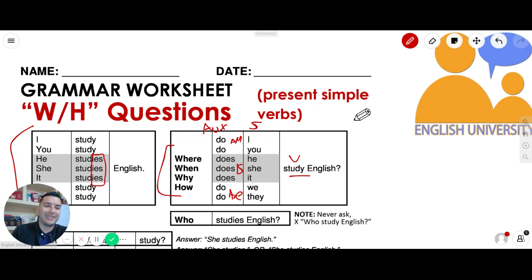All right, so today is Monday, March 18th, 2019. Here we have the formula for the WH questions. How many WH do you know, Joseph?